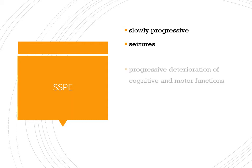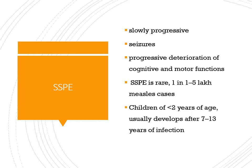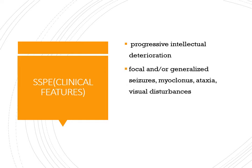SSPE is a slowly progressive disease. Seizures can be a manifestation, along with progressive deterioration of motor and cognitive function. It is rare — one case per one to five lakh measles cases. Children less than two years of age are at more risk, with disease appearing seven to thirteen years after the primary measles infection. Seizures are a very common feature of SSPE.